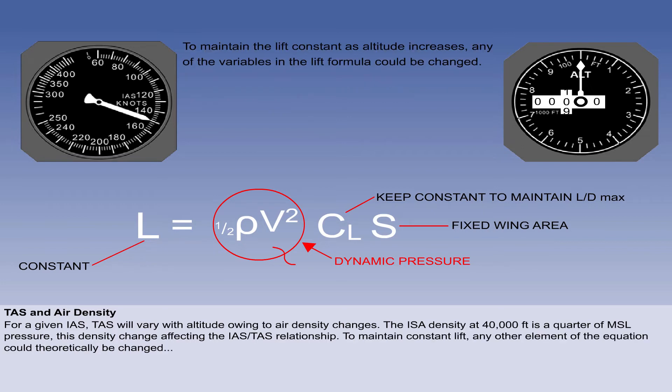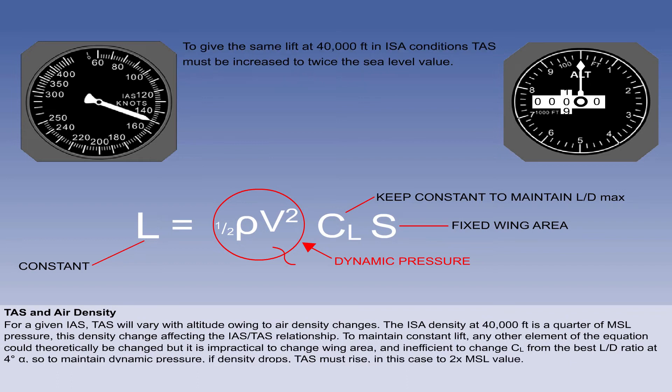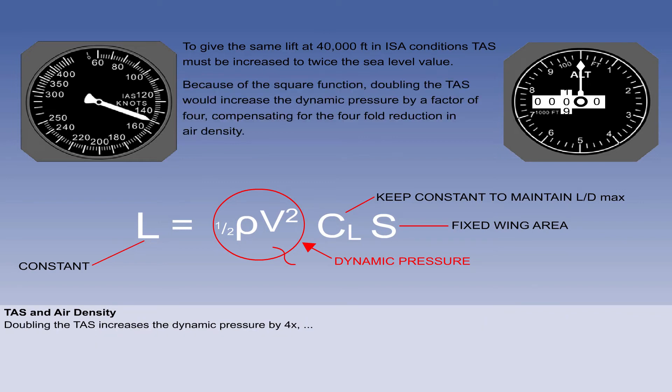To maintain constant lift as density decreases, any of the elements of the equation could be changed. But it is impractical to change wing area, and inefficient to change CL from the best lift-drag ratio at 4 degrees angle of attack. So, since the dynamic pressure must be maintained, if one element drops, the density, the other, the TAS, must rise, in this case to twice the sea level value. Because of the square function of the TAS, doubling it would increase dynamic pressure by 4, compensating for the 4-fold drop in density.